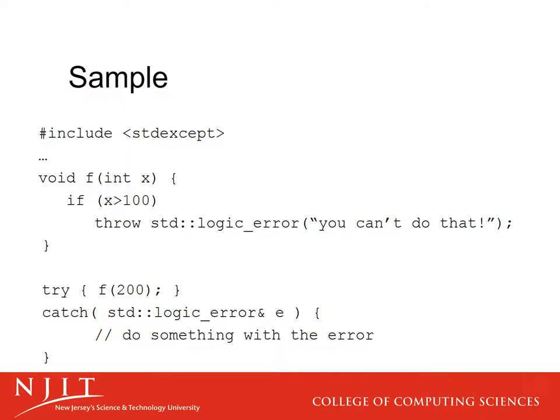There's a whole bunch of exceptions defined in the header 'standard exception'. For example, f(x) is not allowed for values greater than 100, so if called with x > 100 it throws 'std::logic_error' with a string message. You call f inside a try block; if the exception is thrown, it's caught in the catch block. Notice the catch block declares what it's catching as a reference — you want a reference so you don't copy objects around. The logic_error object 'e' has methods like 'what()' that return the error string.